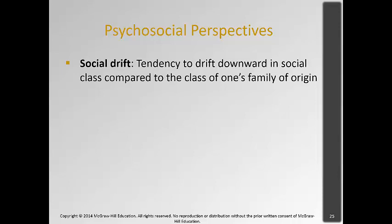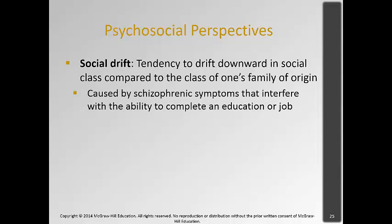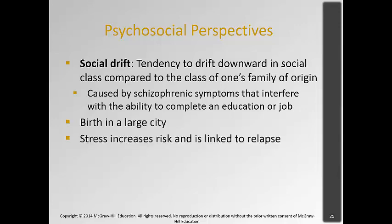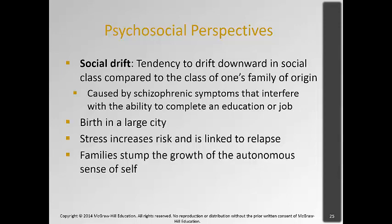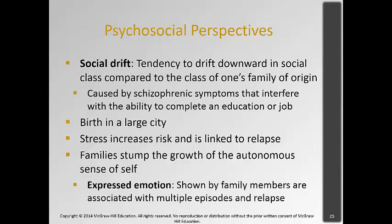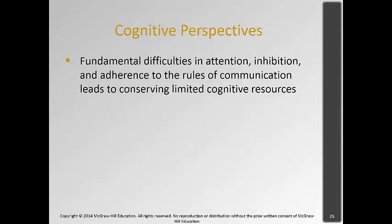We see many individuals with schizophrenia who are homeless and on the street because schizophrenia interferes with their ability to maintain a job or education, and families sometimes can't deal with them any longer. There is evidence that being born in a large city is related to increased stress and relapse. Some theories suggest that families can stunt the growth of an autonomous sense of self, though there is little evidence for this. There is one theory of expressed emotion — high levels of arguing in families increases stress for the individual with schizophrenia and can cause relapse, so much of the therapy involves working with families to decrease that stress.